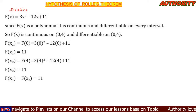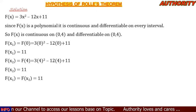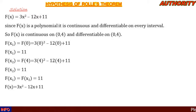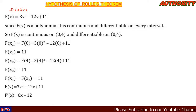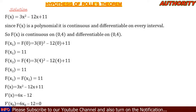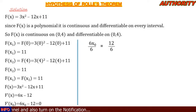Now we need to find x naught such that f prime of x naught equals zero and x naught lies in (0, 4). Differentiating f(x) = 3x² − 12x + 11 gives f prime of x = 6x − 12. Replacing x with x naught: 6x naught − 12 = 0. Solving, 6x naught = 12, so x naught = 2.